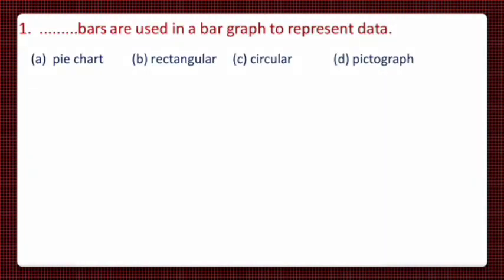Here is the first question kids. Dash bars are used in a bar graph to represent data. This question is in the form of a fill in the blank. You have to fill up the blank with the correct word. And the 4 options are, option A is pie chart, option B is rectangular, option C is circular and option D is pictograph.